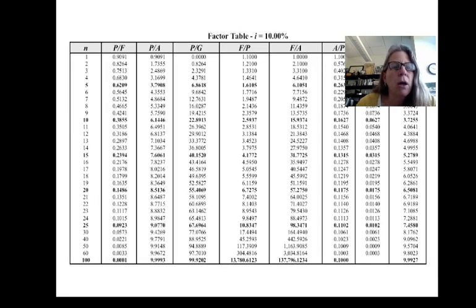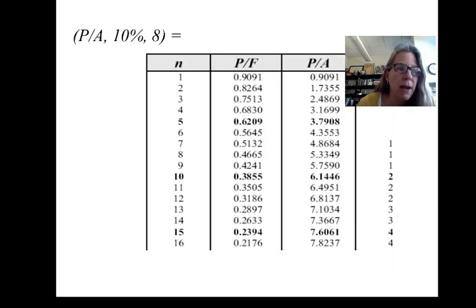In the back of every engineering economy book, there is a table that looks like this, and there's going to be a table for every single interest rate. So you go to the table for a 10% interest rate, let's say. You can see across the top, they'll have all of the different factors: find P given F, find P given A, etc. And along the side is going to be the n number of periods. So if you want to look up P given A, find P, the present value, given an annual cash flow at 10% for eight years, you go to the 10% table, you look down the rows to the one that has an n of eight, and then you move over to the P given A value. And we can see here is 5.3349. That's how you use the tables. They're really simple. You don't have to do the calculations.